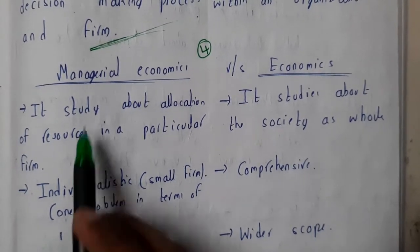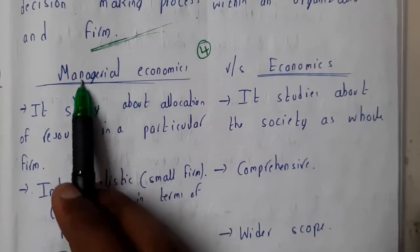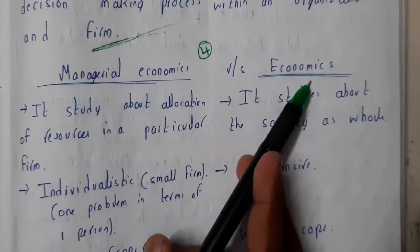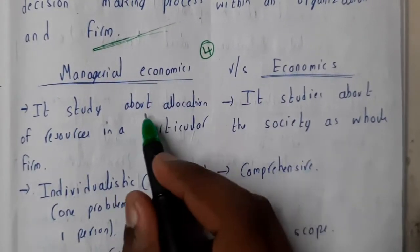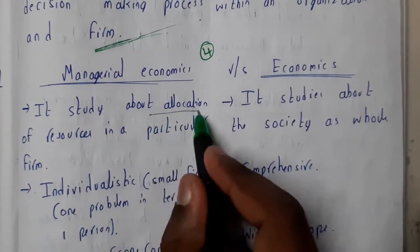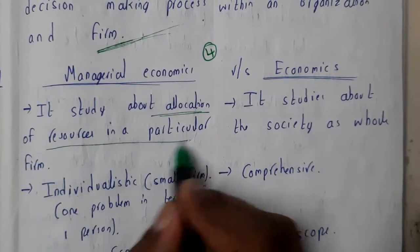Hello guys, we are back with our next lecture. In this lecture, let us go to the differences between managerial economics versus economics. So basically, managerial economics is the study of allocation of resources in a particular firm. It belongs to a particular firm.